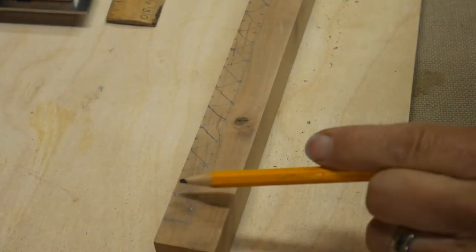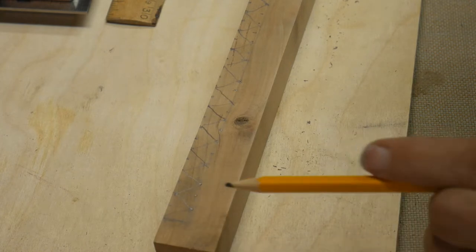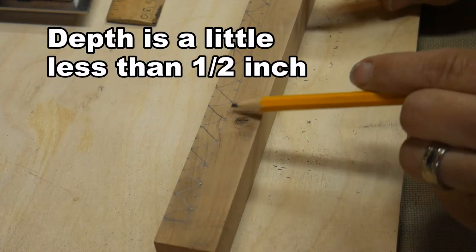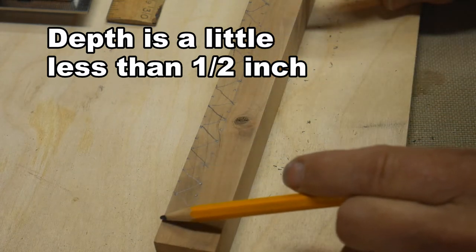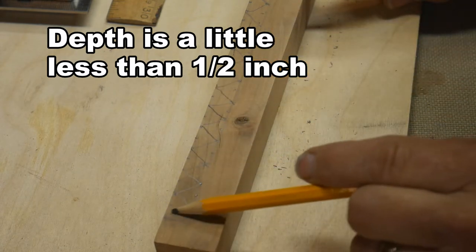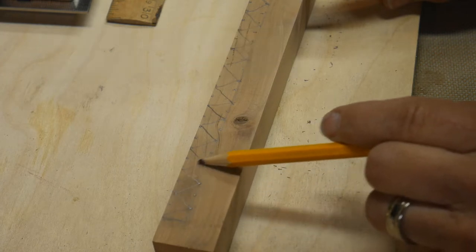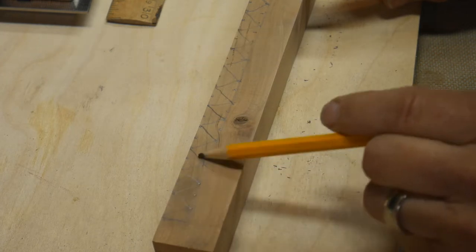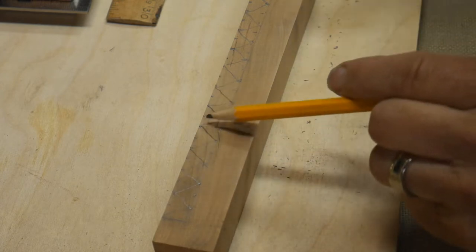Alright so again this is a quarter of an inch deep. I marked an eighth of an inch dots on the bottom part and eighth of an inch dot on the top part. And then I did little V's which actually makes the opening about a quarter of an inch on top instead of an eighth of an inch.